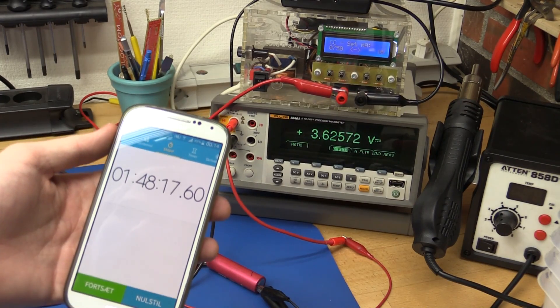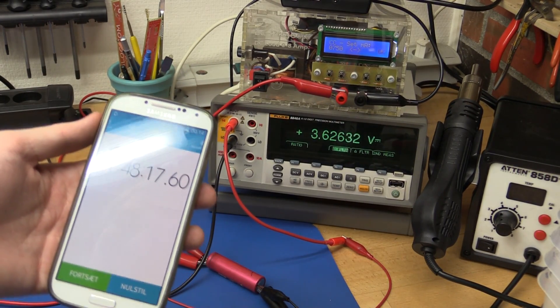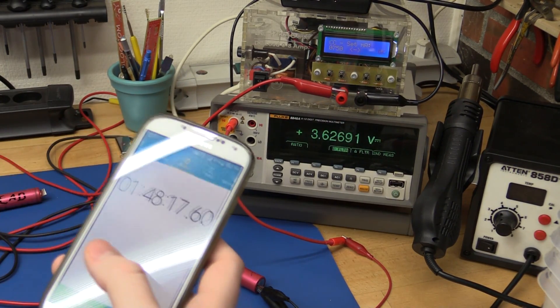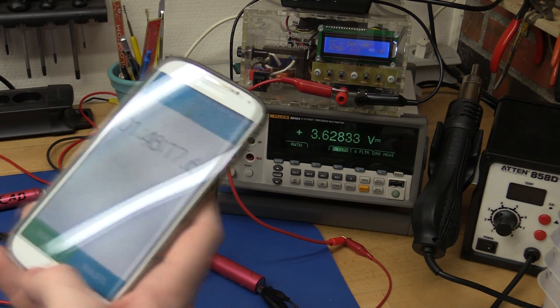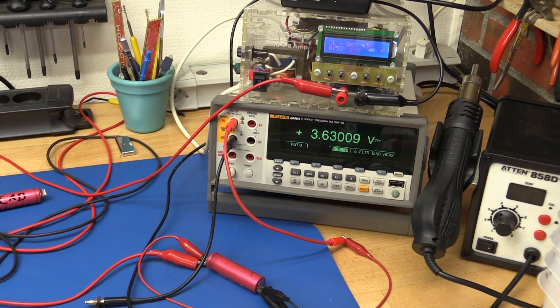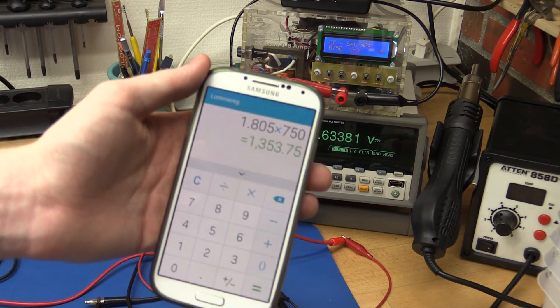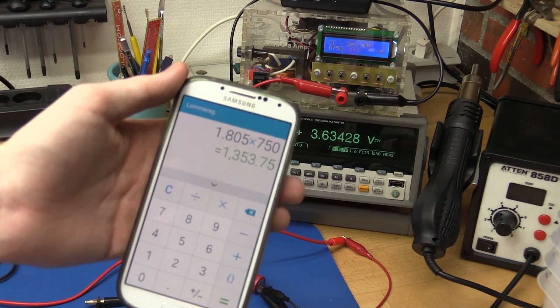So 1 hour 48 minutes and 17 seconds, that would be around 108 minutes. 108.3 divided by 60 is 1.805 hours times 750 milliamps. That gives you 1.35 amp hours.